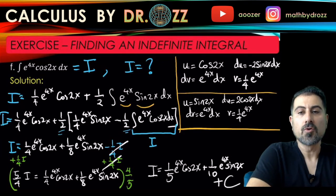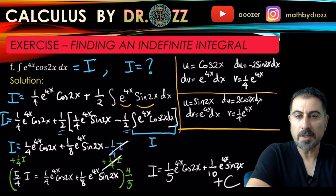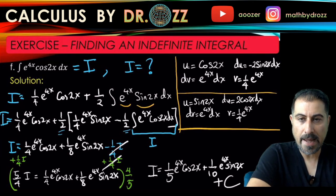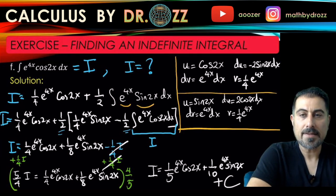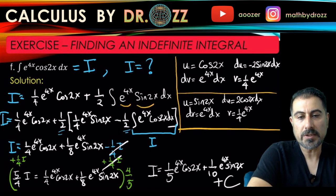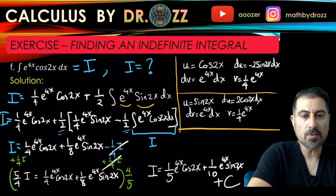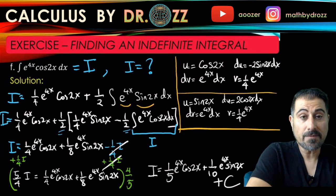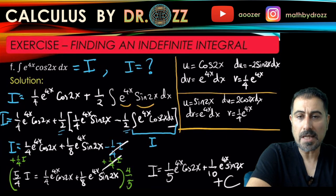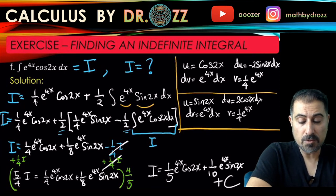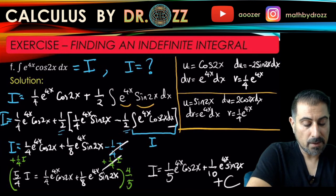The I, which is the integral that is being questioned in statement F, is integrated as one-fifth e to the 4x cosine 2x plus one-tenth e to the 4x sine 2x plus C. Again, this is a very special type of integral we call it a circling or looping behavior here - a looping integral - because what you are trying to integrate pops somewhere in the integration by parts formulation on the right-hand side.